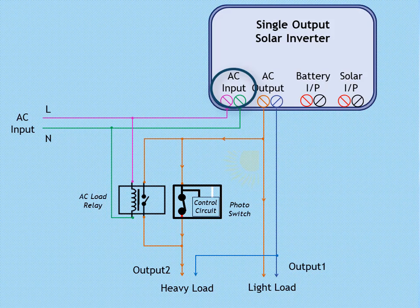During daytime when AC input of inverter is disconnected and weather is sunny, then heavy load would be run by the solar power through photo sensor switch. Batteries will experience normal amount of current.